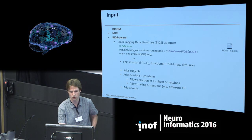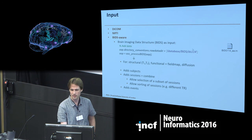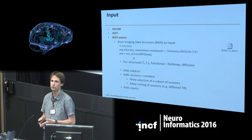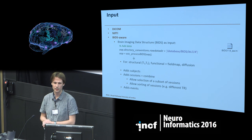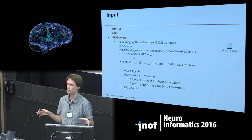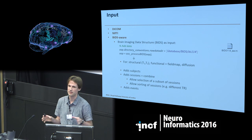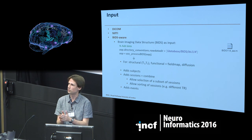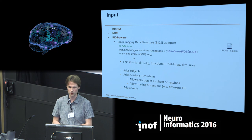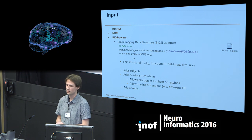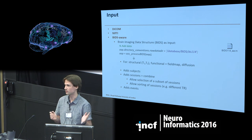With just two lines, you specify the root directory of your BIDS dataset and use a command that puts everything — structural, functional, field map, diffusion — into the pipeline. It will automatically add the subjects or sessions that are available. You can specify whether multiple sessions should be treated as different subjects or combined in a within-subject model. It also allows sub-selecting different sets of subjects or sessions and adds all the events.